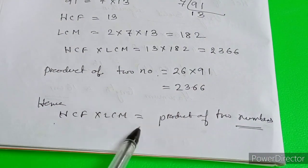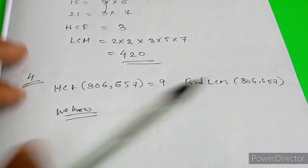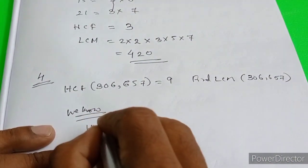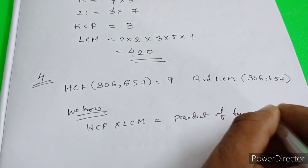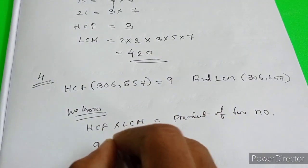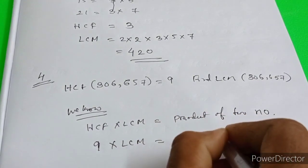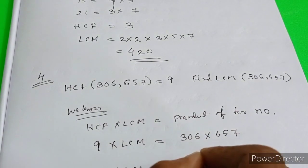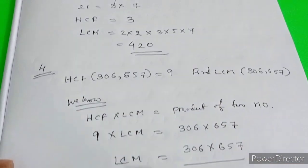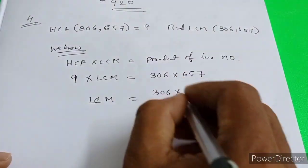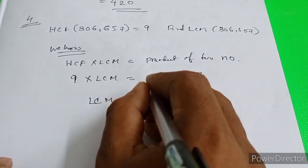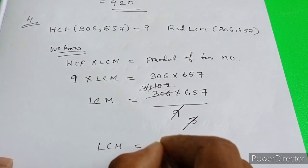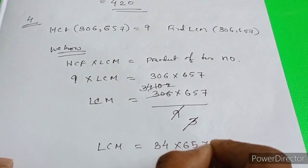We know the formula we just used: HCF into LCM equals product of two numbers. That is 9 into LCM equals 306 into 657. So LCM equals 306 into 657 divided by 9, which is 34 into 657.